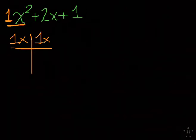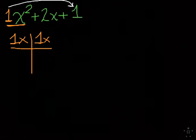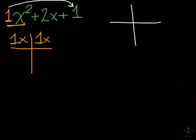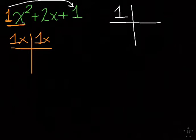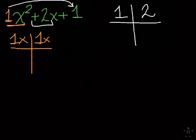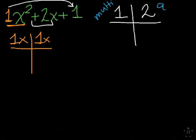The next step is very simple: we're going to multiply the first number and the last number together. This is called the ac method. Whatever number I get when I multiply, I draw another little chart to the side. So 1 times 1 is 1 — that goes first. The middle number goes in the second spot. I'm looking for numbers that when I multiply them I get the first number in the chart, and when I add them I get the second number in the chart.